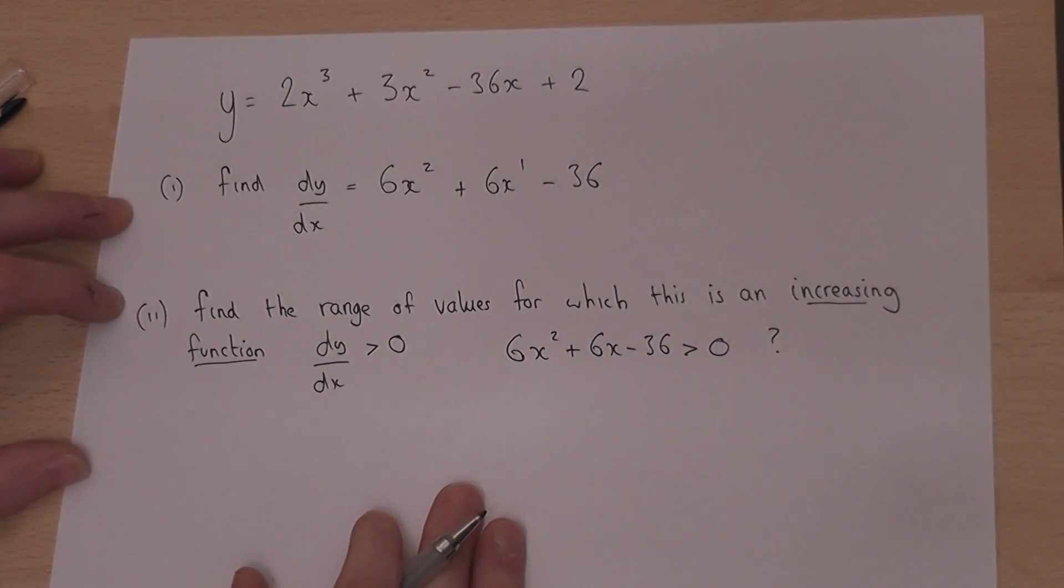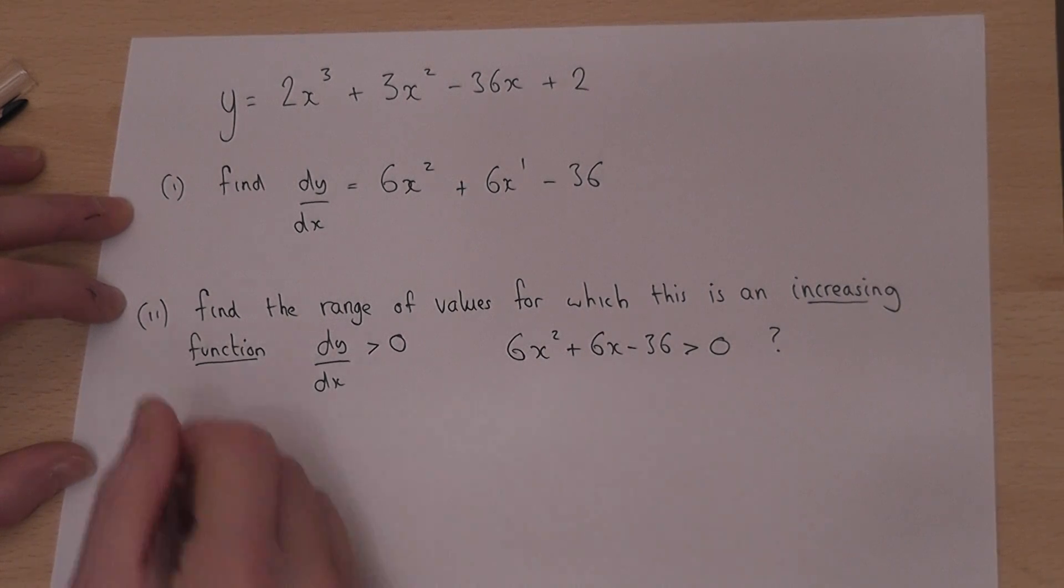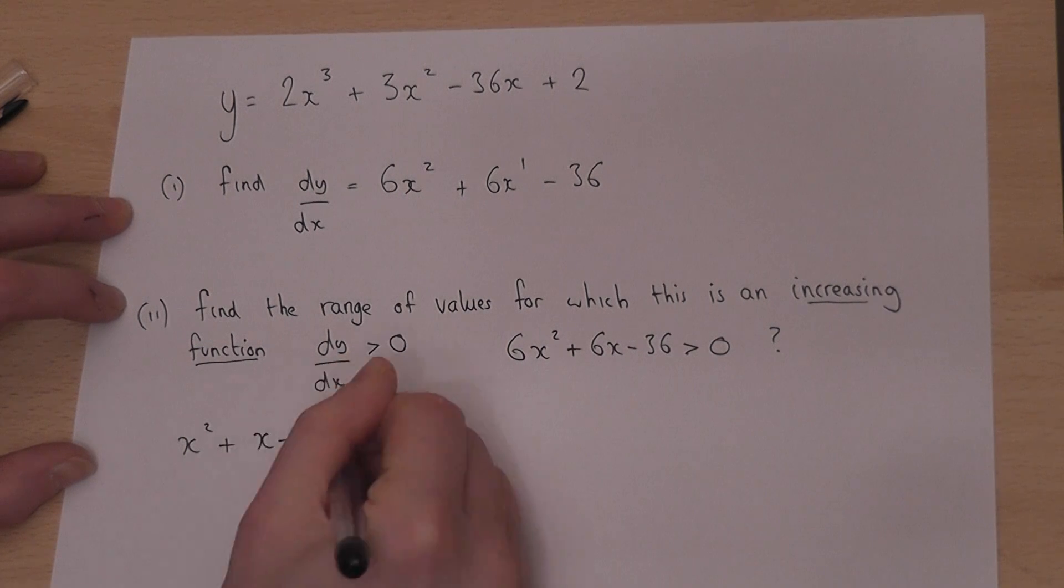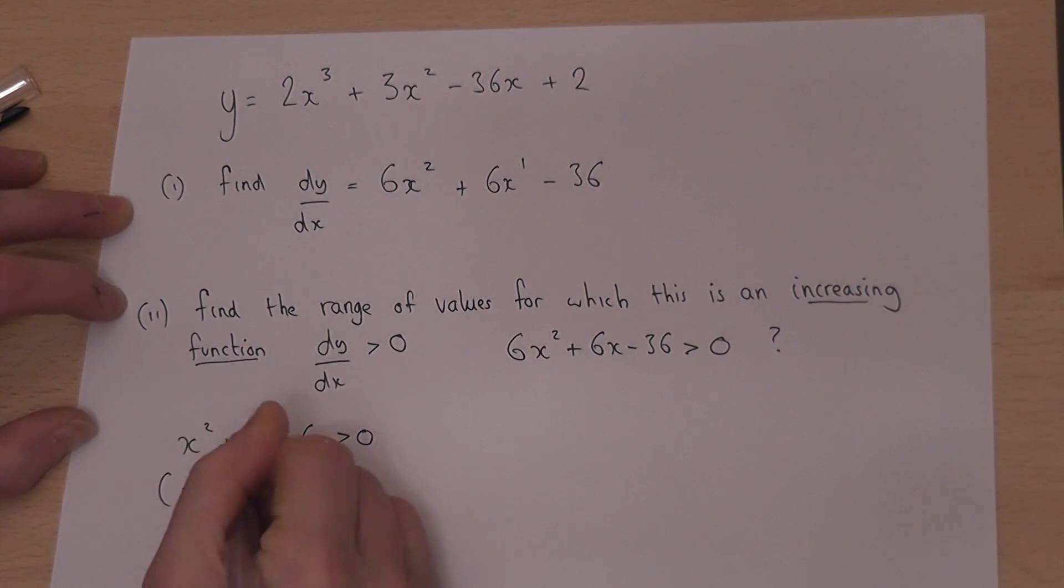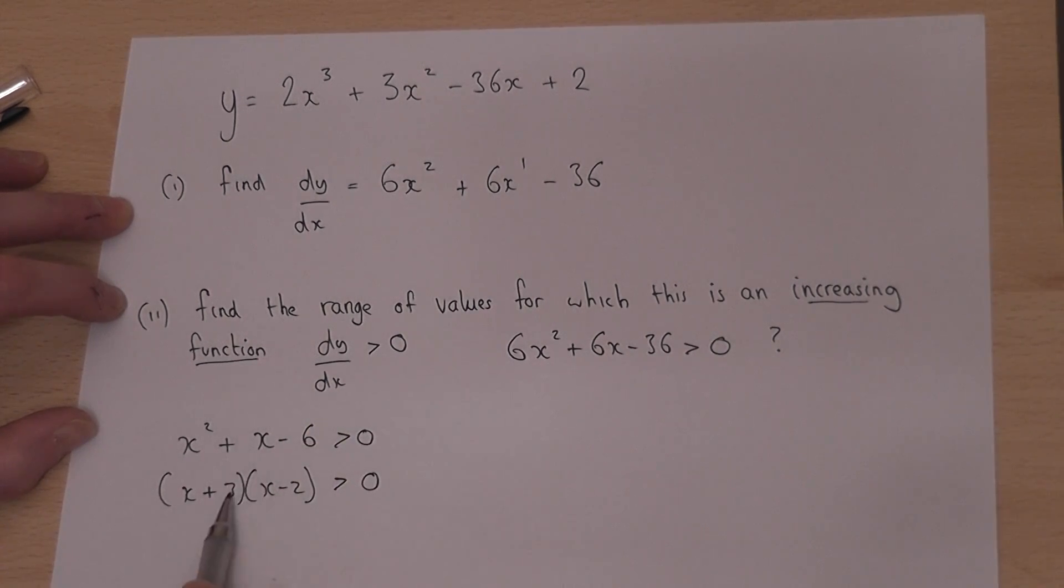Now, to do this, we can divide this by 6. So we have x squared plus x, take 6, bigger than 0. This factorises x plus 3, x minus 2, bigger than 0. 3 take 2 is 1, 3 times minus 2 is minus 6.